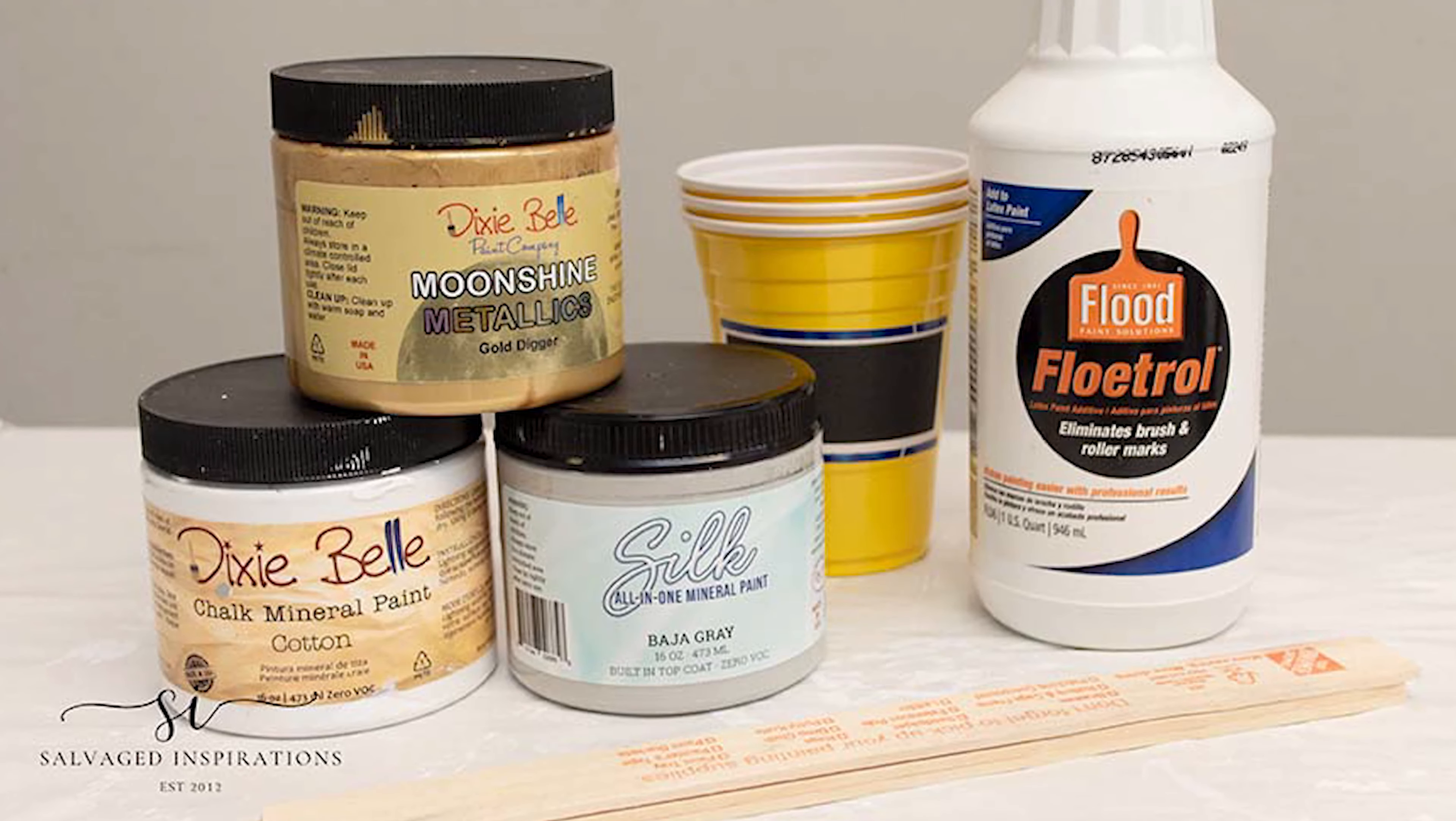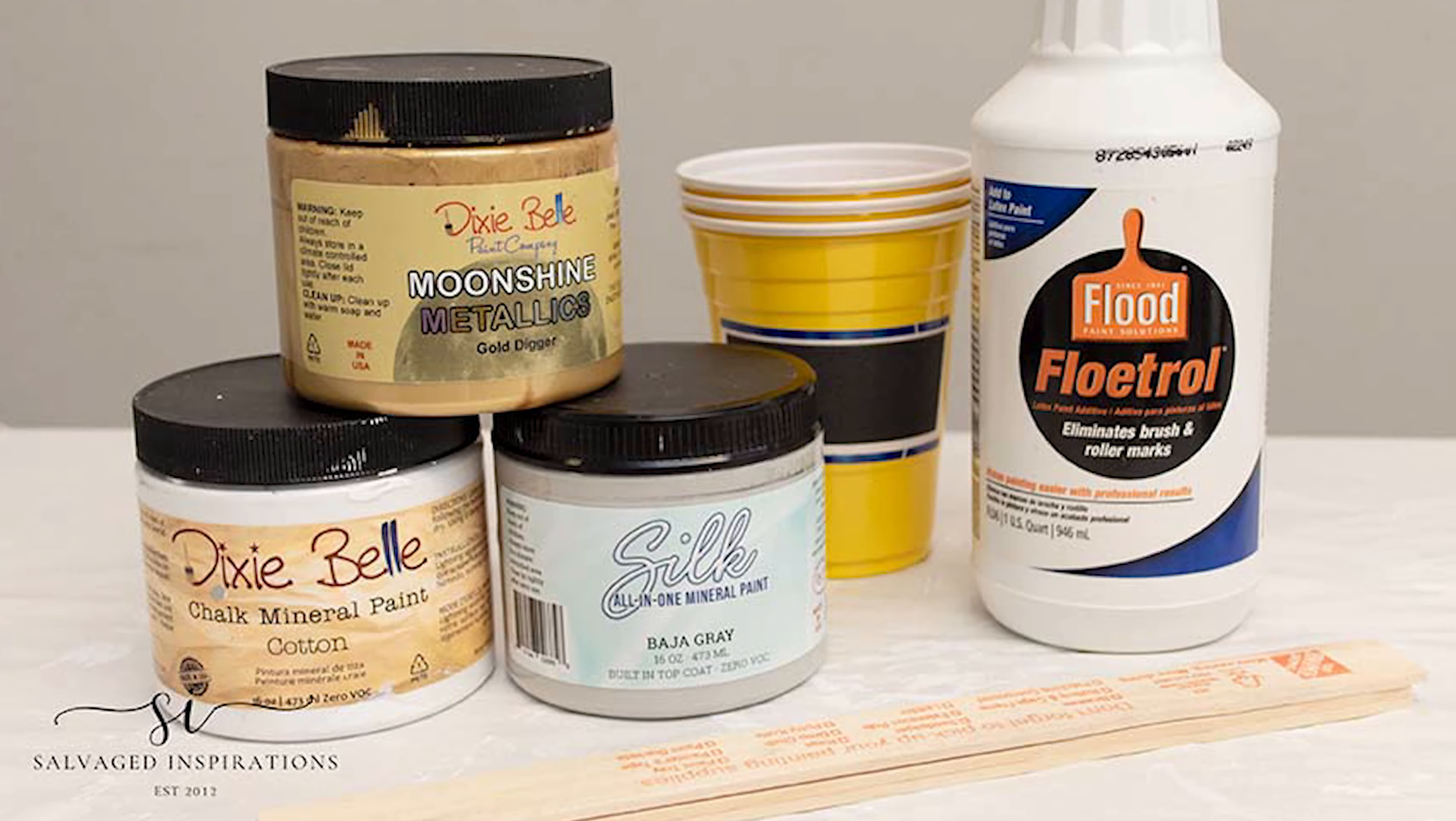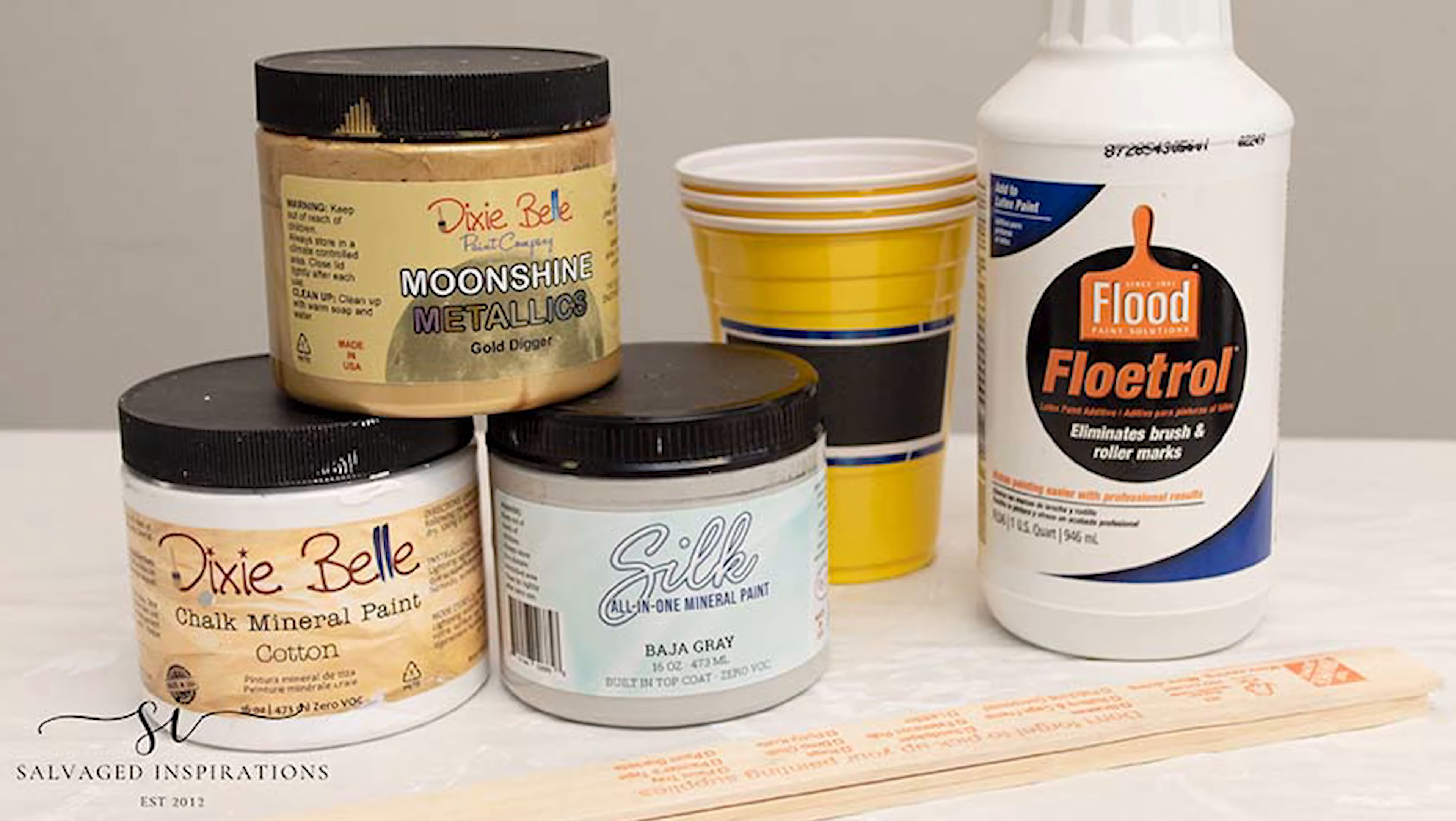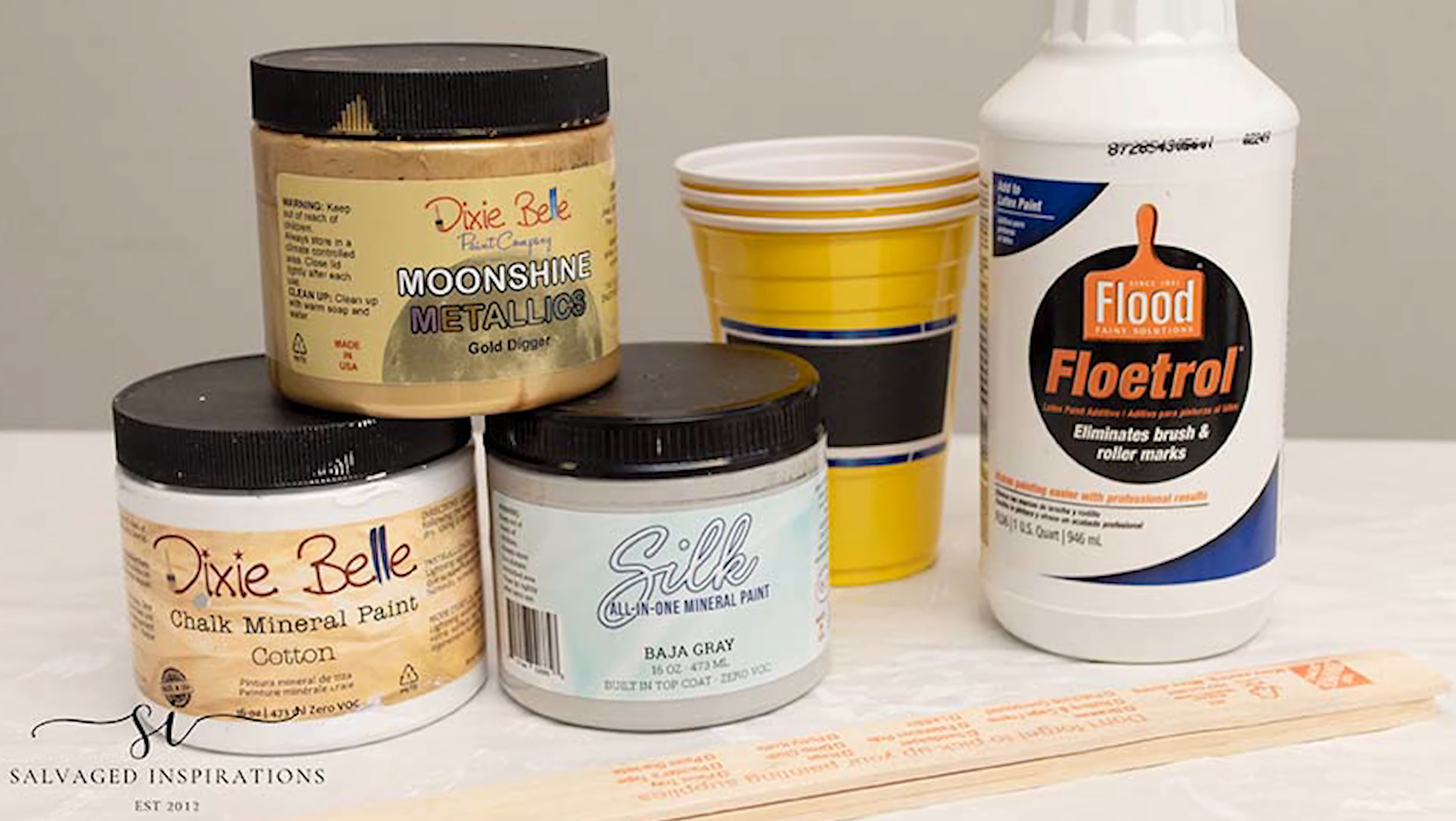Before I started my pour, I gathered my paint colors for the marble which are cotton white, baja gray, and gold metallic for a little sparkle.